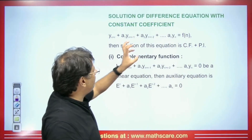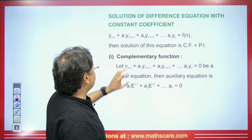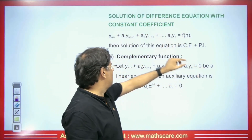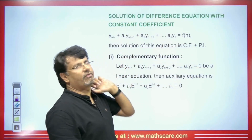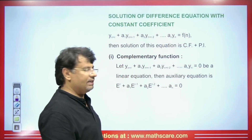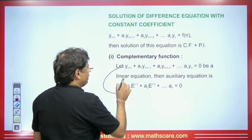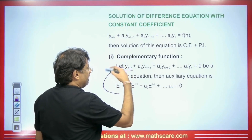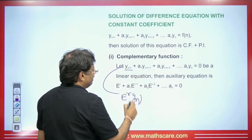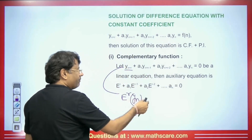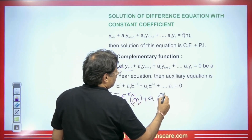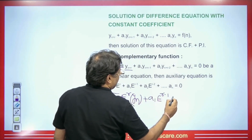We will discuss how to find the complementary function. If we have any difference equation, we set it equal to 0. Then we write the auxiliary equation. Just follow the steps. Here, yn+r can be written as E^r · yn. If we shift r times, it comes as E^r. Similarly, we get A2·E^(r-2)·yn.